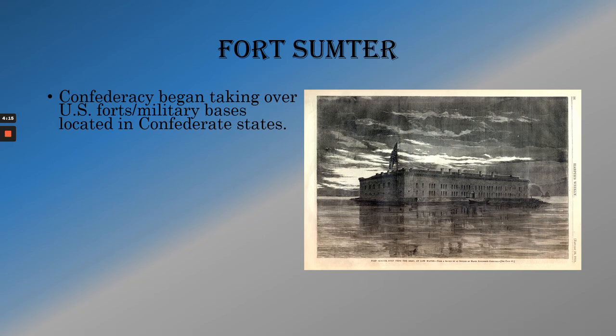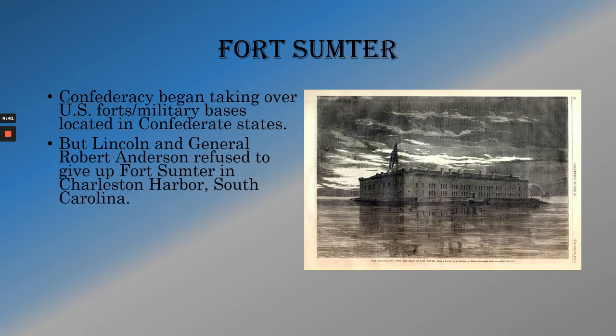So what did you do with these federal forts in the Confederate States? The Confederate States said, 'You're sitting on our land, so this fort belongs to us.' They particularly took this position with respect to Fort Sumter, which is out in the Charleston Harbor — Charleston being the biggest port in the South and where a lot of international trade came in and out. On the East Coast, Charleston was a very important location. The Confederacy demanded Fort Sumter, but Lincoln and the general in charge there, a man named Robert Anderson, refused to give it up — saying these are Union soldiers, this was built and paid for by the United States of America, and the Confederacy can't have it.